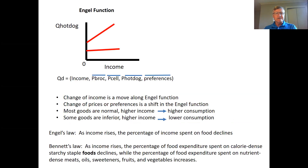Another economic relationship we look at in food demand is the Engel function — how quantity demanded of a good relates to our income. We have the same demand function — quantity demanded as a function of income, the three prices, and preferences. Let's hold the price of hot dogs, the prices of other goods, and preferences constant, and just look at the relationship between income and quantity demanded of hot dogs. We call that the Engel function. A change in income is shown as a movement along that red line, while changing prices or preferences would shift the Engel function.